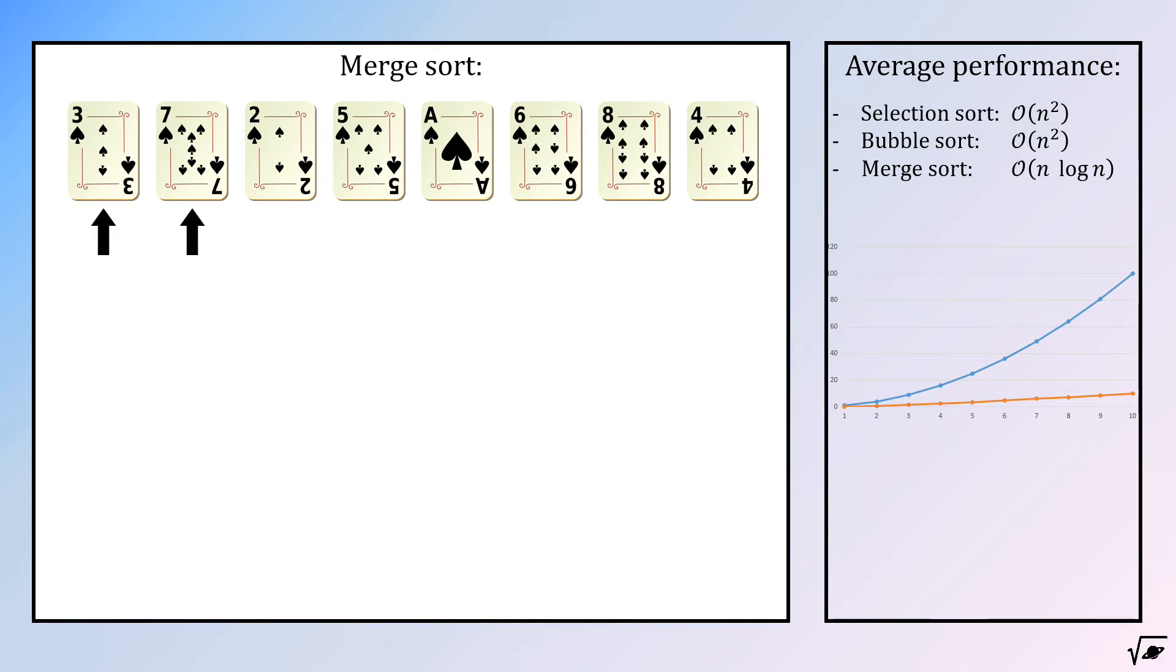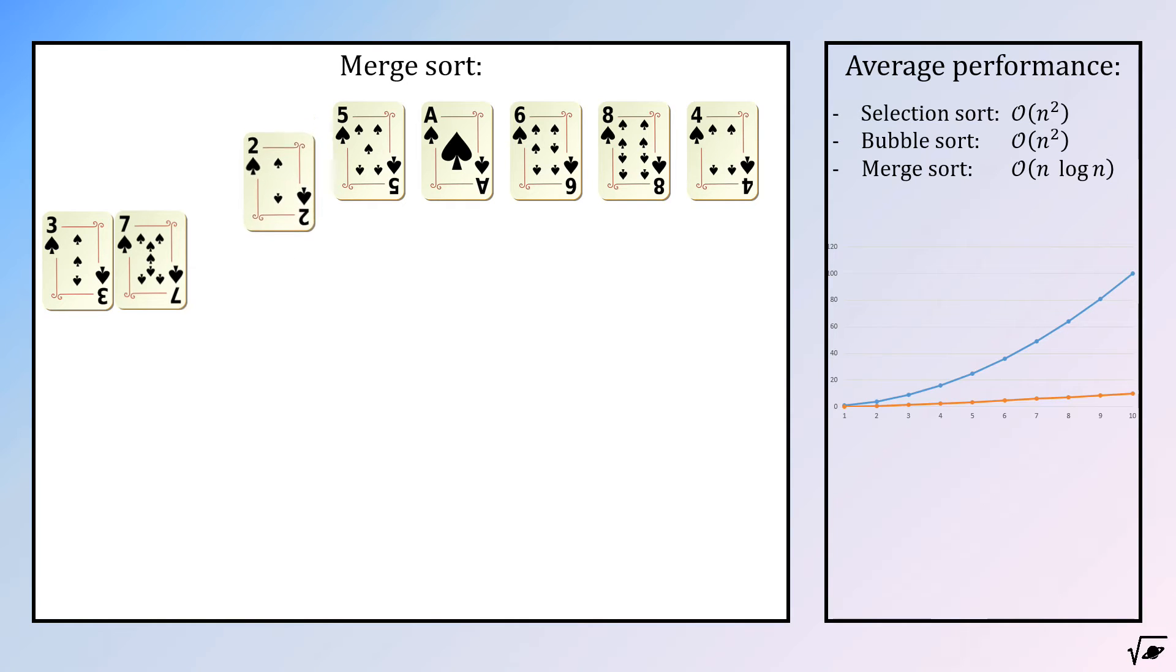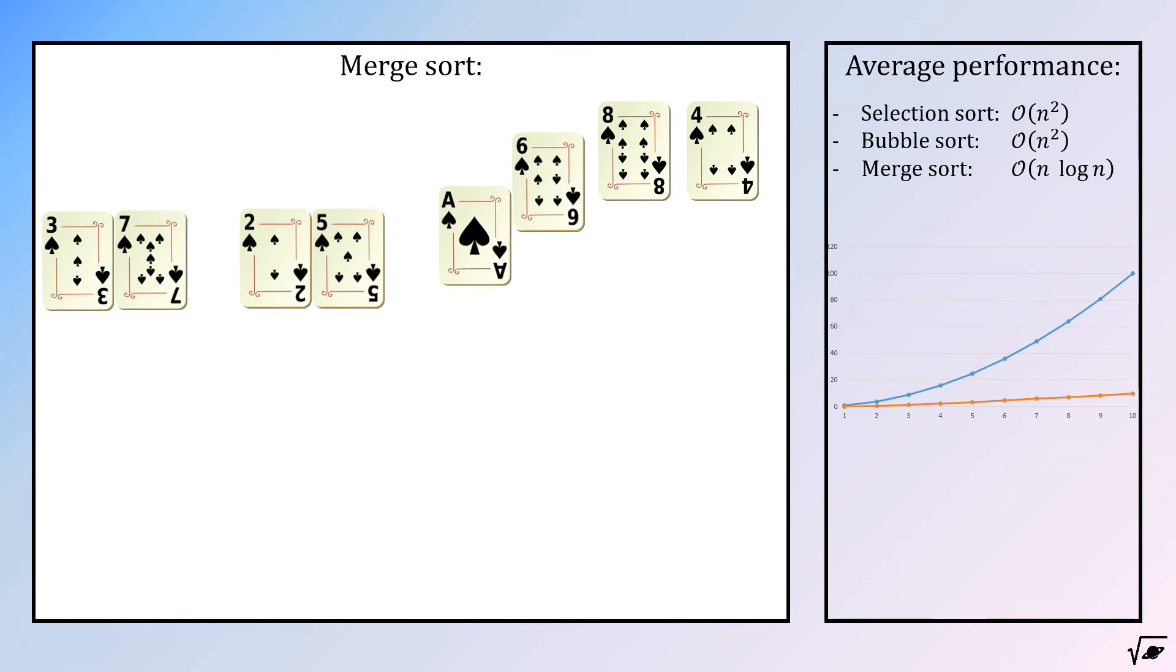The first two sequences, or the first two cards, will be put into a new list with the smallest one in front. This will be done for every duo of cards, creating in total 4 new sequences.